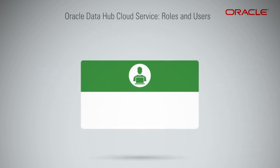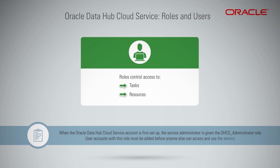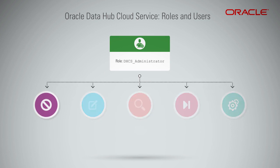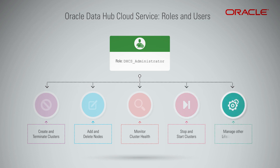Oracle Data Hub Cloud Service uses roles to control access to tasks and resources. A role assigned to a user gives certain privileges to that user. When the Oracle Data Hub Cloud Service account is first set up, the Service Administrator is given the DHCS Administrator role. User accounts with this role must be added before anyone else can access and use the service. With complete administrative control, this user can create and terminate clusters, add and delete nodes, monitor cluster health, stop and start clusters, and manage other lifecycle events.